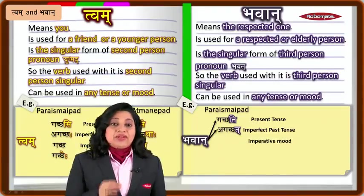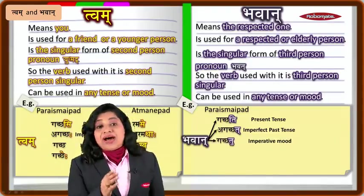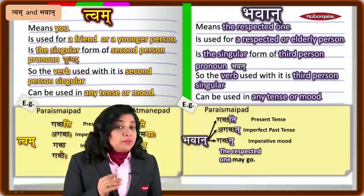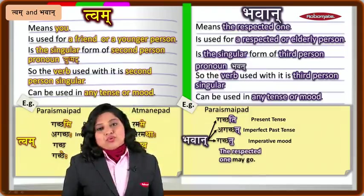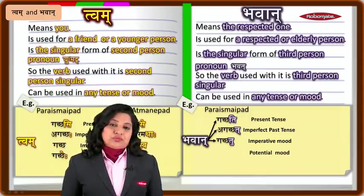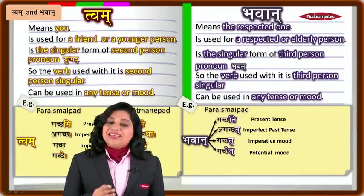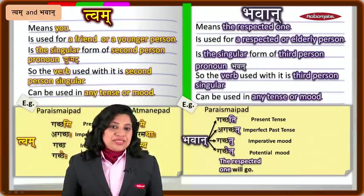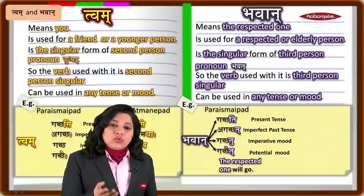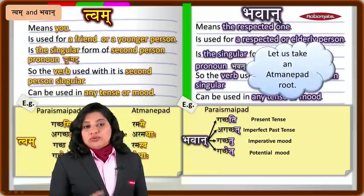In the imperative mood: 'bhavan gacchatu,' meaning 'the respected one may go.' In the potential mood: 'bhavan gacchet,' meaning 'the respected one will or would go.' For the ātmanepada dhatu, just as we saw with ram, let us get the corresponding forms.